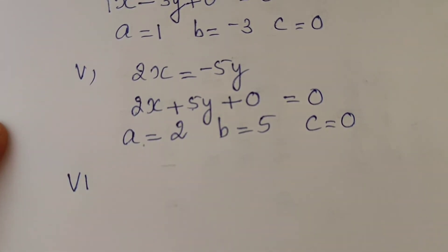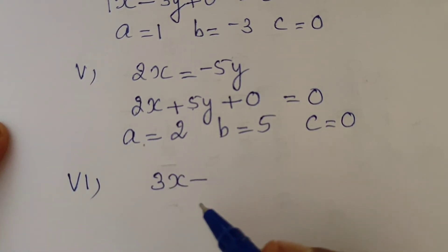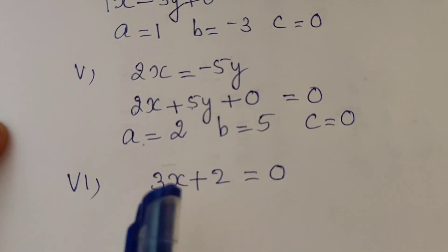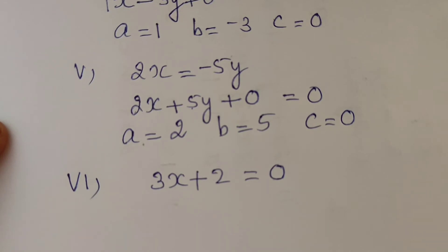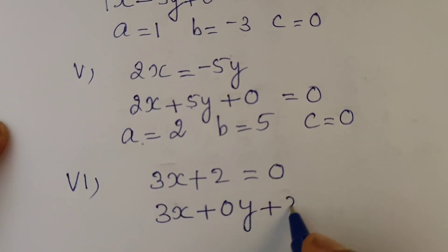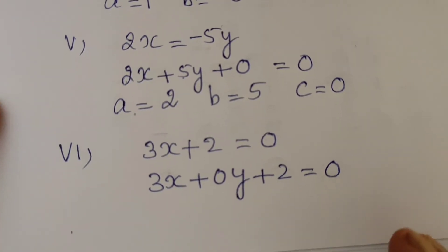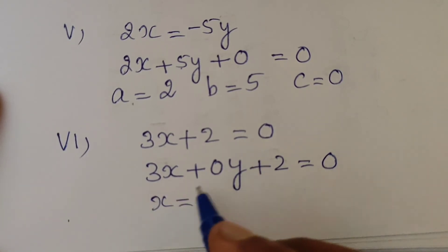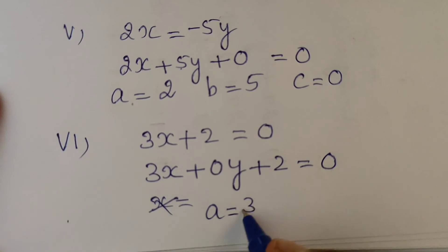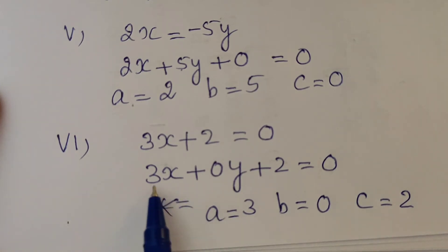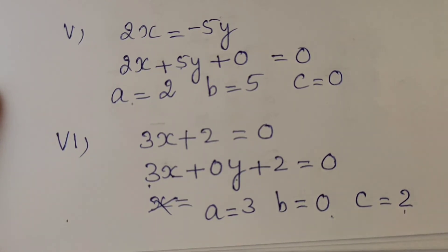Part (vi): 3x plus 2 equal to 0. Here there is no y variable, so we write 0y. The equation becomes 3x plus 0y plus 2 equal to 0. Therefore, a is equal to 3, b is equal to 0 since the coefficient of y is 0, and c is equal to 2.